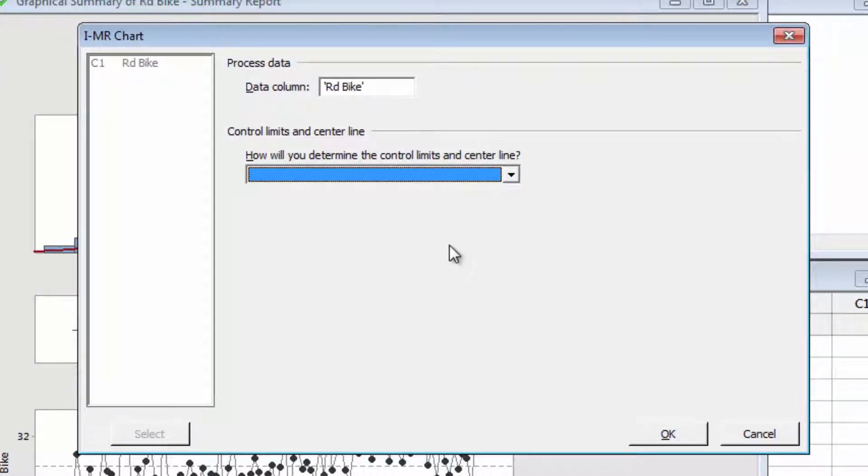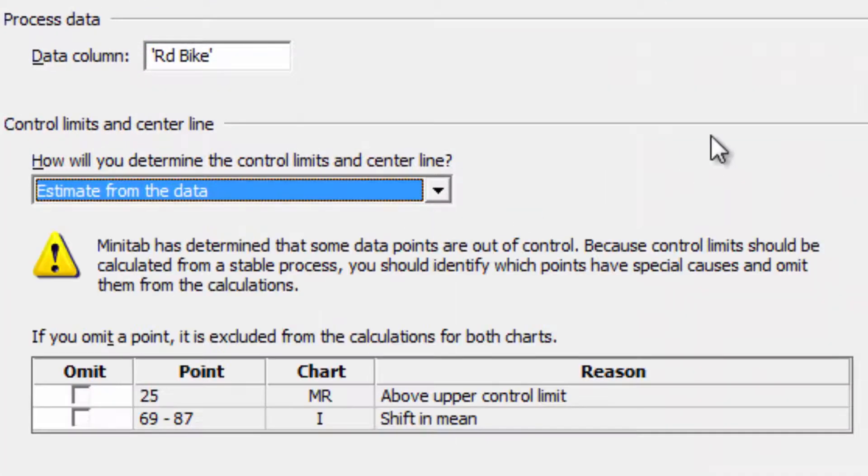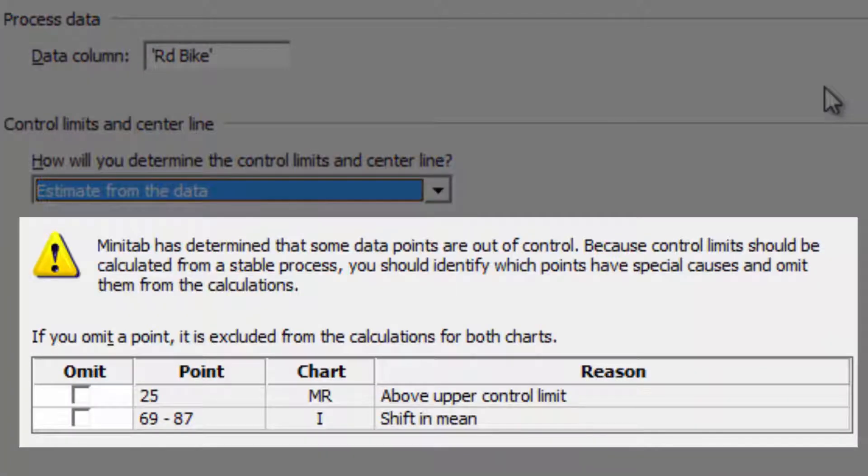If you're monitoring a process with established control limits, you can enter them in the Assistant. Or, as we'll do in this case, you can simply let the Assistant estimate them from the data. The Assistant automatically reviews your data for out-of-control points. If one of these points has a special cause, such as an equipment failure, you can tell the Assistant not to use it when calculating the control limits. The Assistant has flagged several points in this data, but Joel can't identify any special causes to justify removing them.